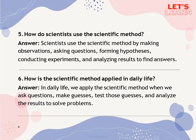Question 5: How do scientists use the scientific method? Scientists use the scientific method by making observations, asking questions, forming hypotheses, conducting experiments and analyzing results to find answers. Question 6: How is the scientific method applied in daily life? In daily life, we apply the scientific method when we ask questions, make guesses, test those guesses and analyze the results to solve problems.